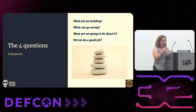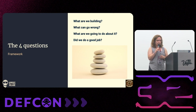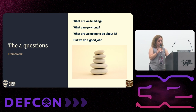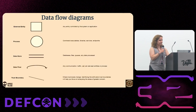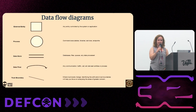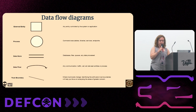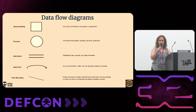Moving on to how exactly we do threat modeling. One way is to use these four questions as a framework: What are we working on? What could go wrong? What are we hoping to do about it? And did we do a good enough job? And then we combine those questions with some simplistic components in the data flow diagram. DFDs cover most of the concepts in a system: entities, processes, data stores and data flows, and most importantly, trust boundaries.